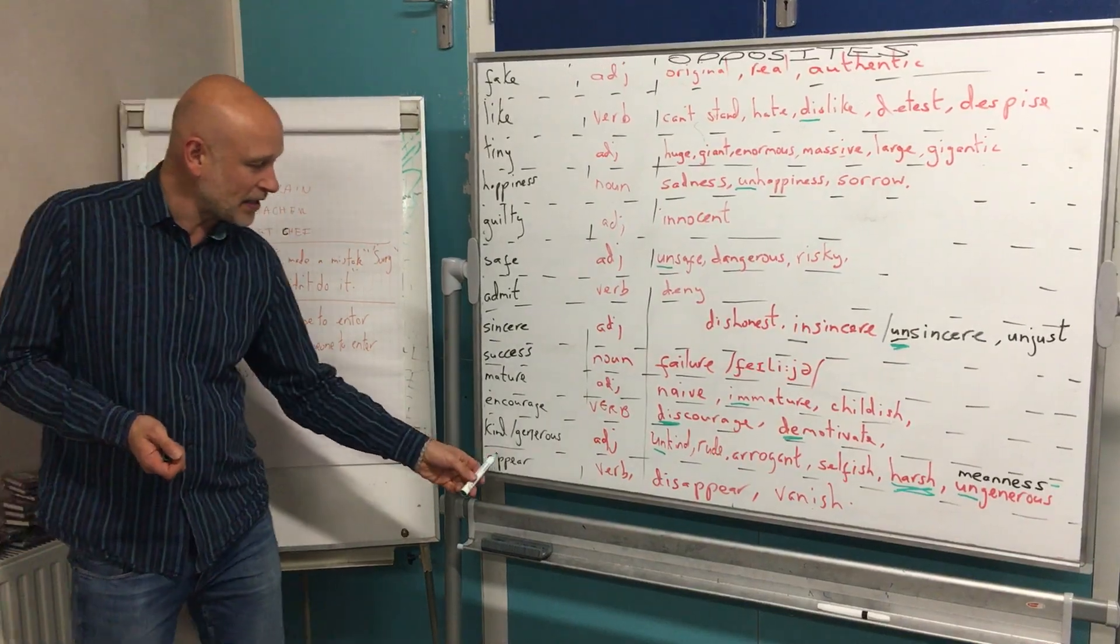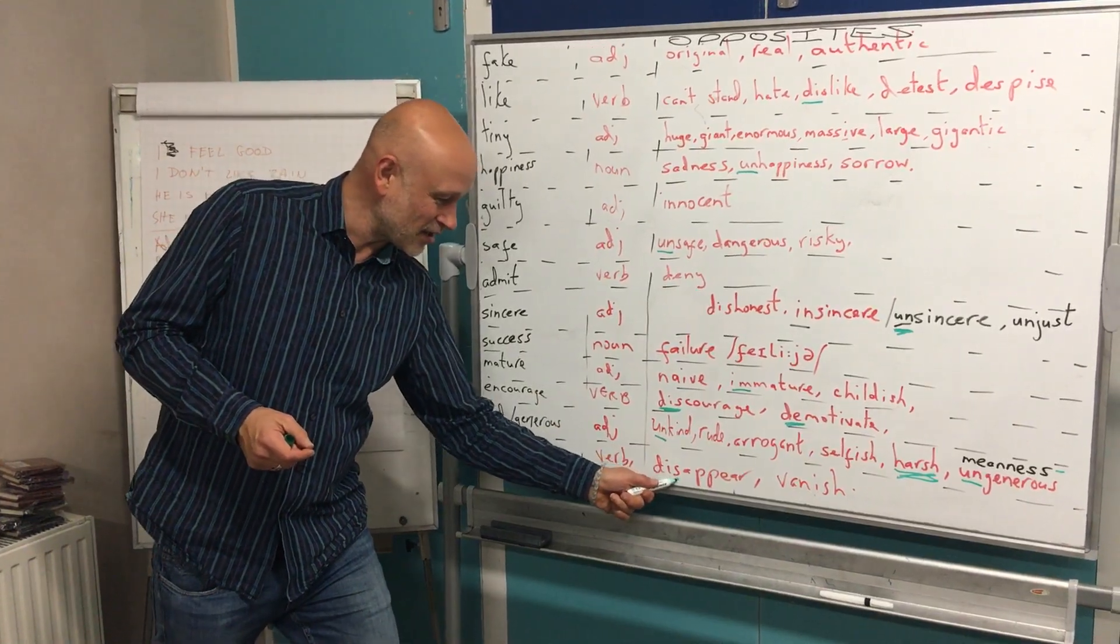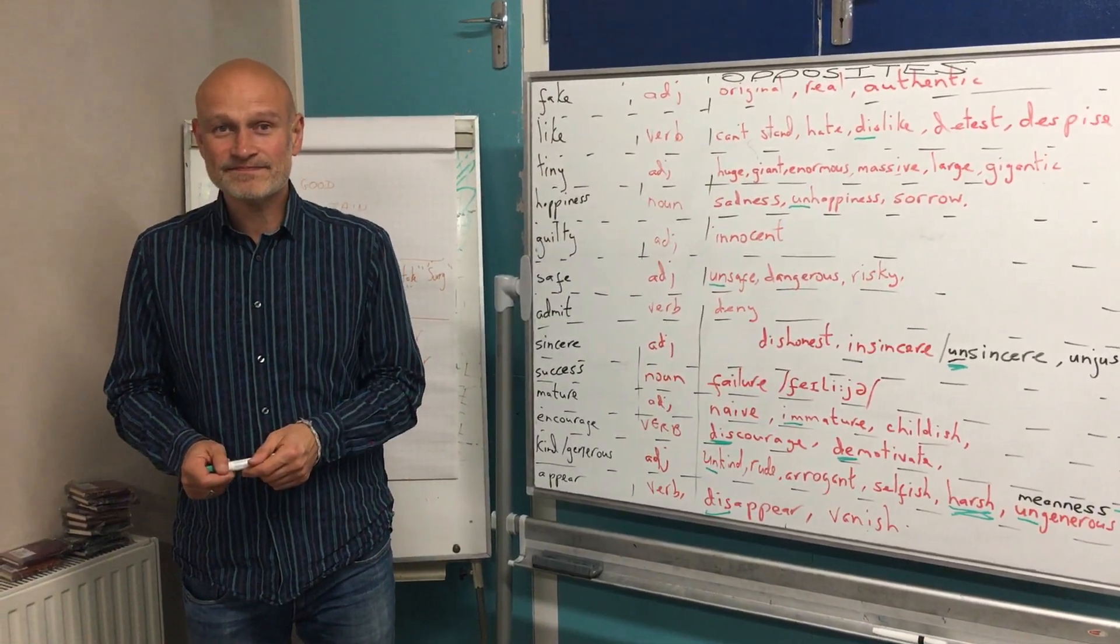And finally, appear is a verb. And the opposites. You've got them both. Disappear. Lovely prefix. And vanish. Well done. Well done. Here we go. All done.